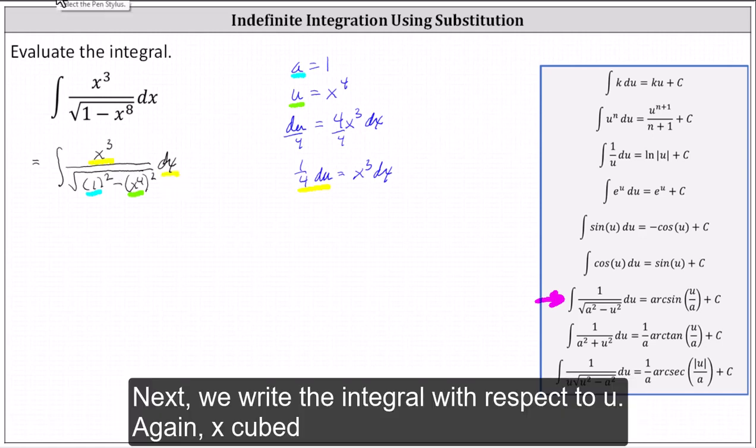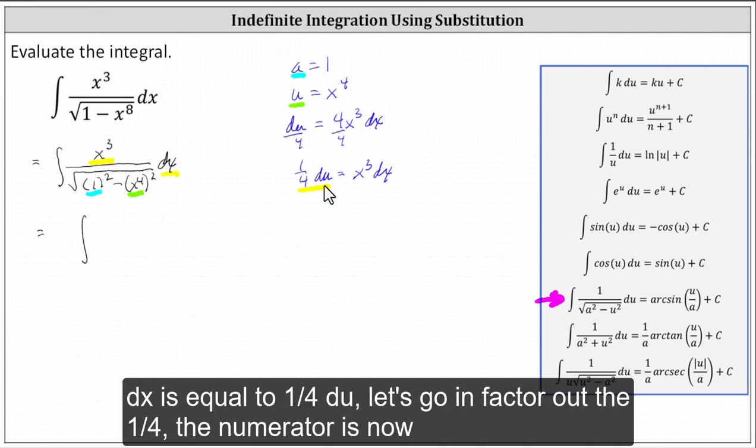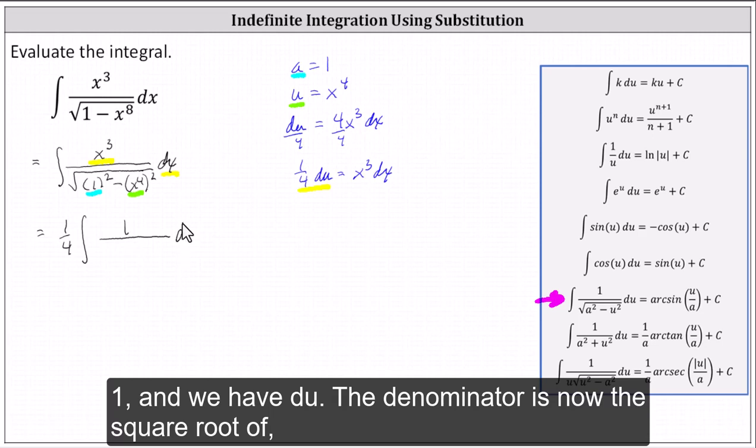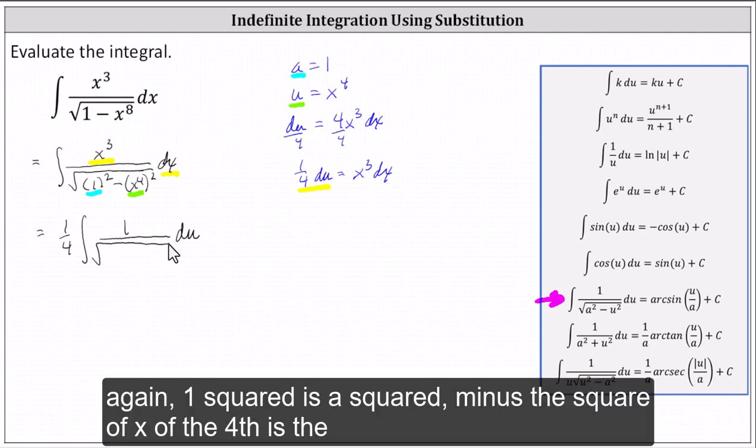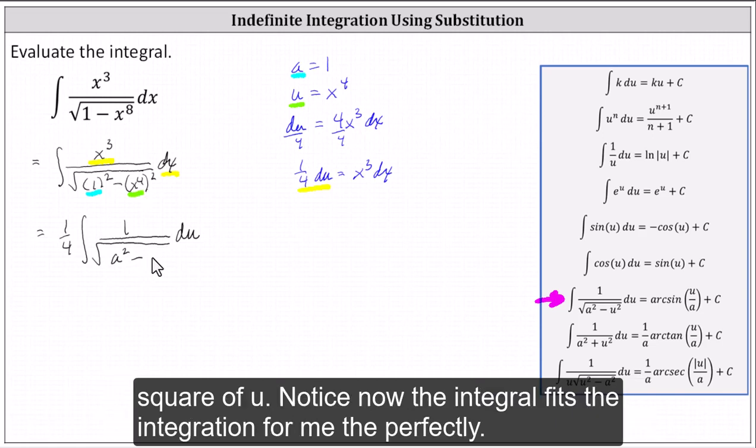Next, we write the integral with respect to u. Again, x cubed dx is equal to one-fourth du. Let's go ahead and factor out the one-fourth. The numerator is now one, and we have du. The denominator is now the square root of one squared, which is a squared, minus the square of x to the fourth, which is the square of u.